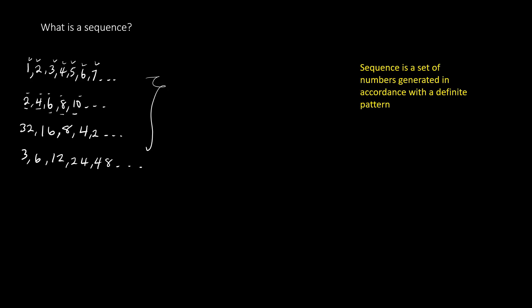We are not choosing a random number like 2, 20, 4, 1, 0, and so on, where each is different from the previous one. This brings us to what we refer to as definite and indefinite sequences.